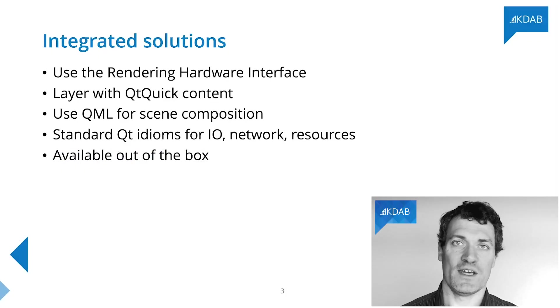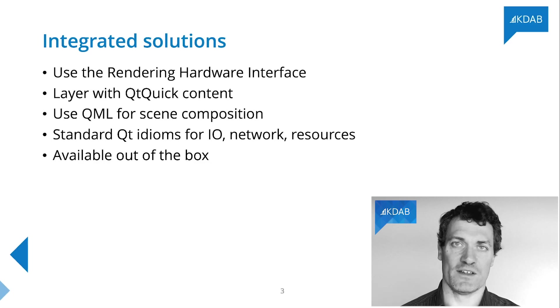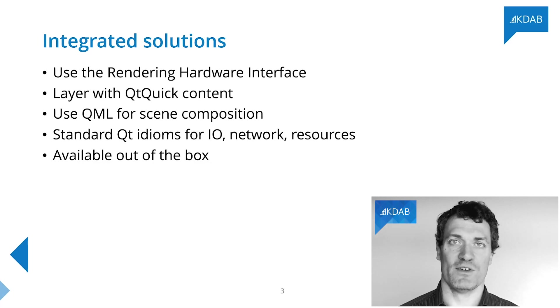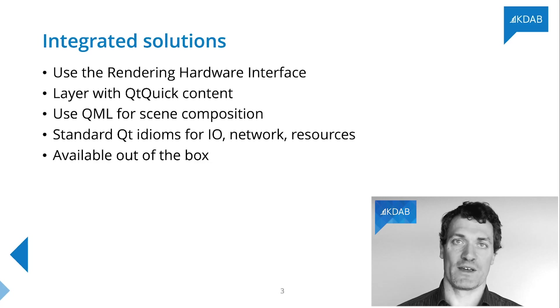The first thing I'm going to talk about is what I mean by an integrated solution and what particular features that would imply compared to other ways you might integrate 3D. The key things we're concerned about in a solution for 3D in Qt 6 are that it uses the rendering hardware interface, which is the new abstraction for different underlying graphics APIs on different platforms, which is used by Qt Quick.